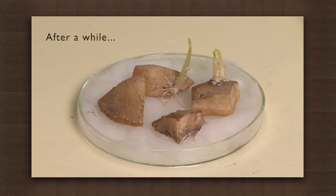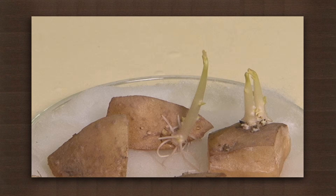You see the growth of buds in the pieces where there were buds, but the plain pieces have not developed any of these structures. If we plant these buds in the soil, a potato plant will grow. So potato plants can reproduce through buds that develop on their nutritious underground modified stems.